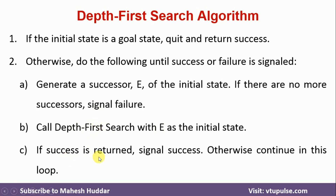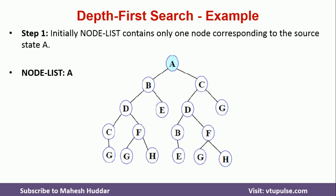If success is returned, it means we have reached the goal state. Otherwise, we return failure again. Now we will take a very simple example to understand this DFS algorithm. This is the graph given to us, where A is the initial state and G is the goal state.